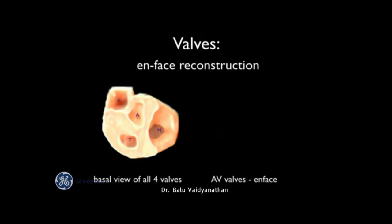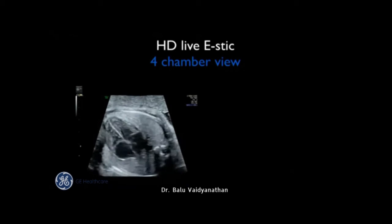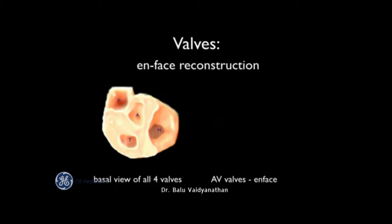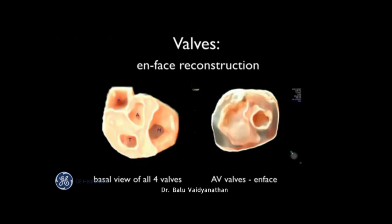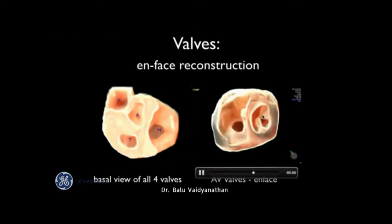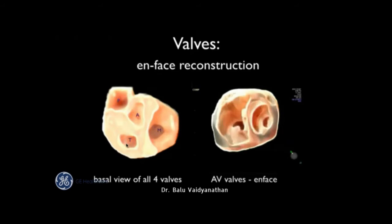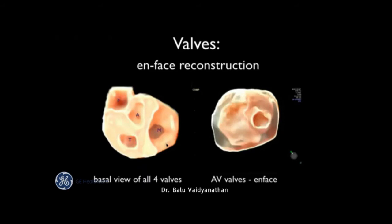One thing people haven't tried much is the en-face reconstruction of the atrioventricular valves. In 2D we see valves as two leaflets moving up and down, but in actual surgical view the valves have multiple leaflets. Here I'm looking at the atrioventricular valves from the atrium — the way a surgeon views the valves. We can see the mitral valve on one side and the tricuspid valve on the other. This is the basal view of the heart showing all four valves: mitral, aortic, tricuspid, and pulmonary. The aortic and mitral valves are close together, while the tricuspid and pulmonary are far apart — what cardiologists define as aorto-mitral continuity. The aorta is to the right and posterior of the pulmonary artery, which is the normal relationship with the PA left and anterior. In transposition, these relationships are altered.